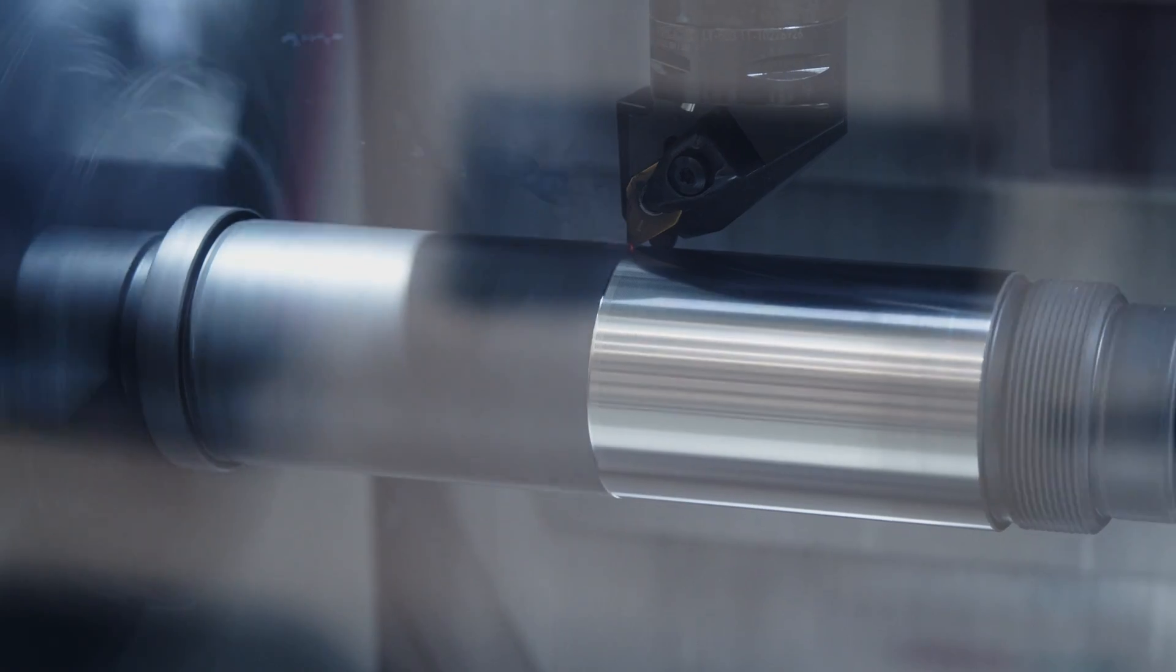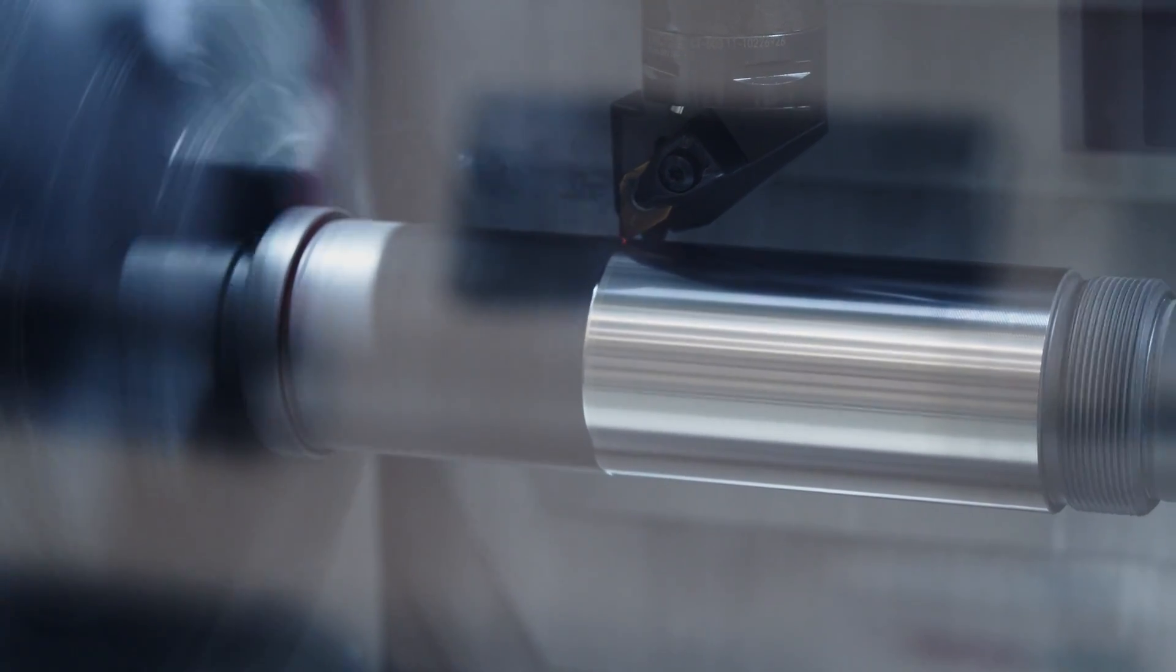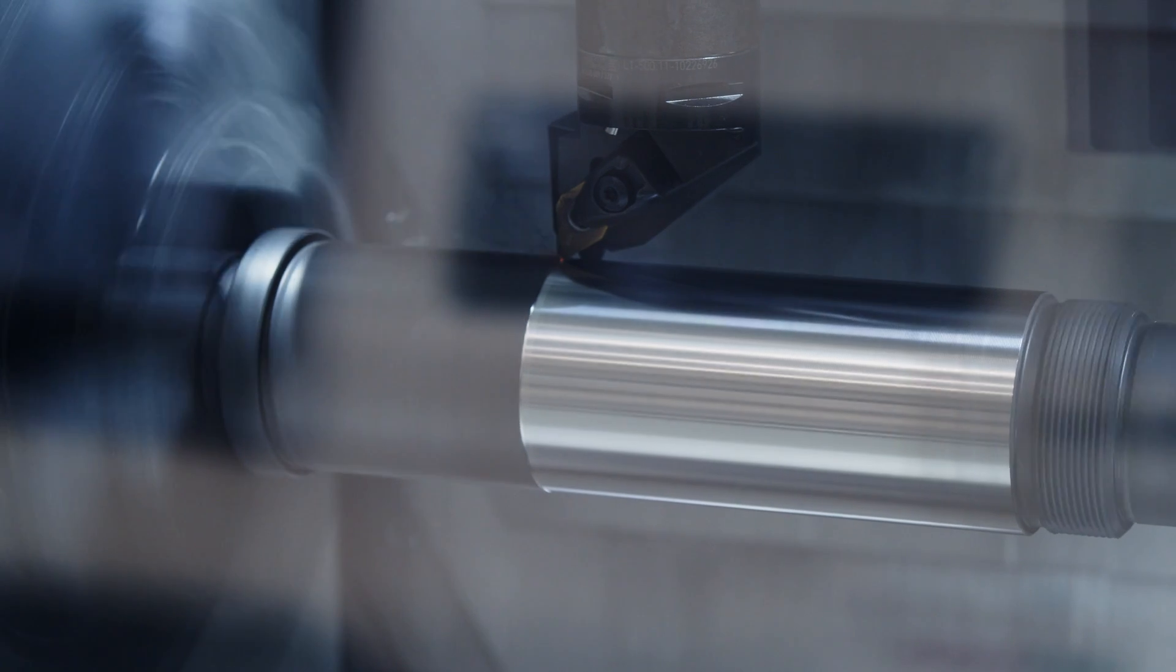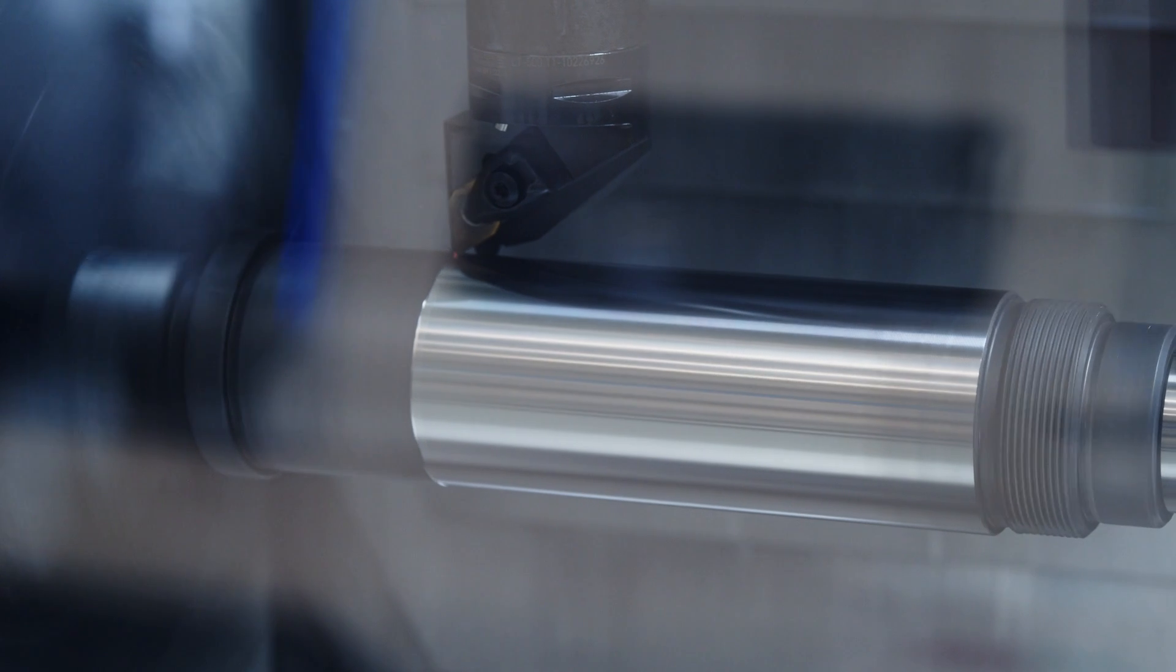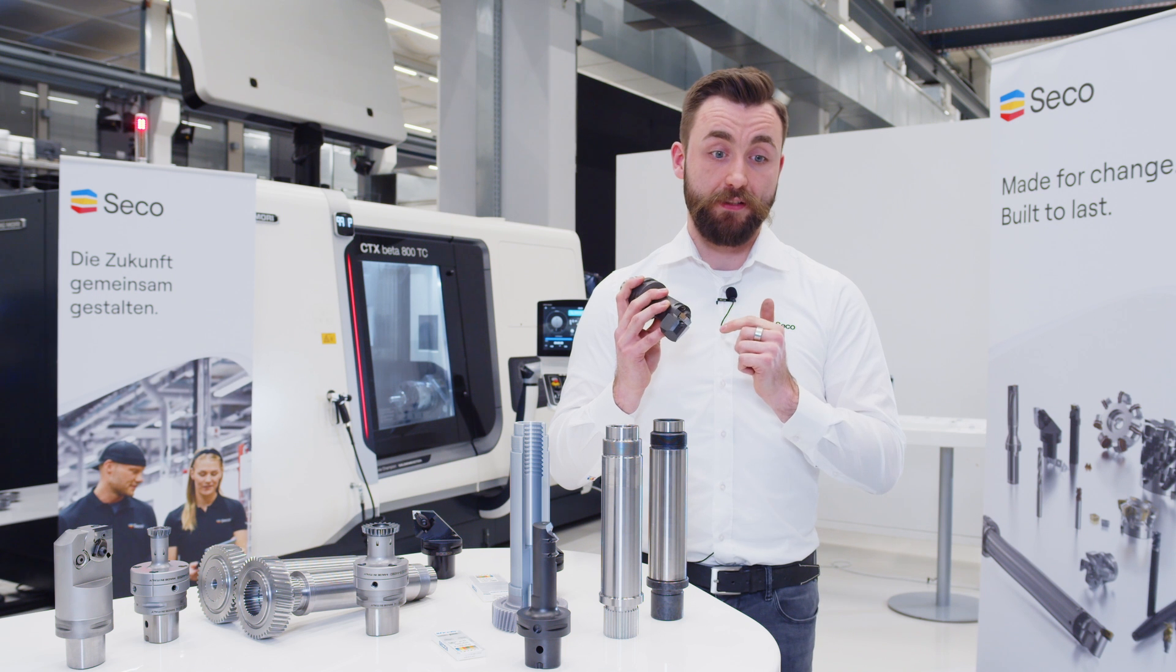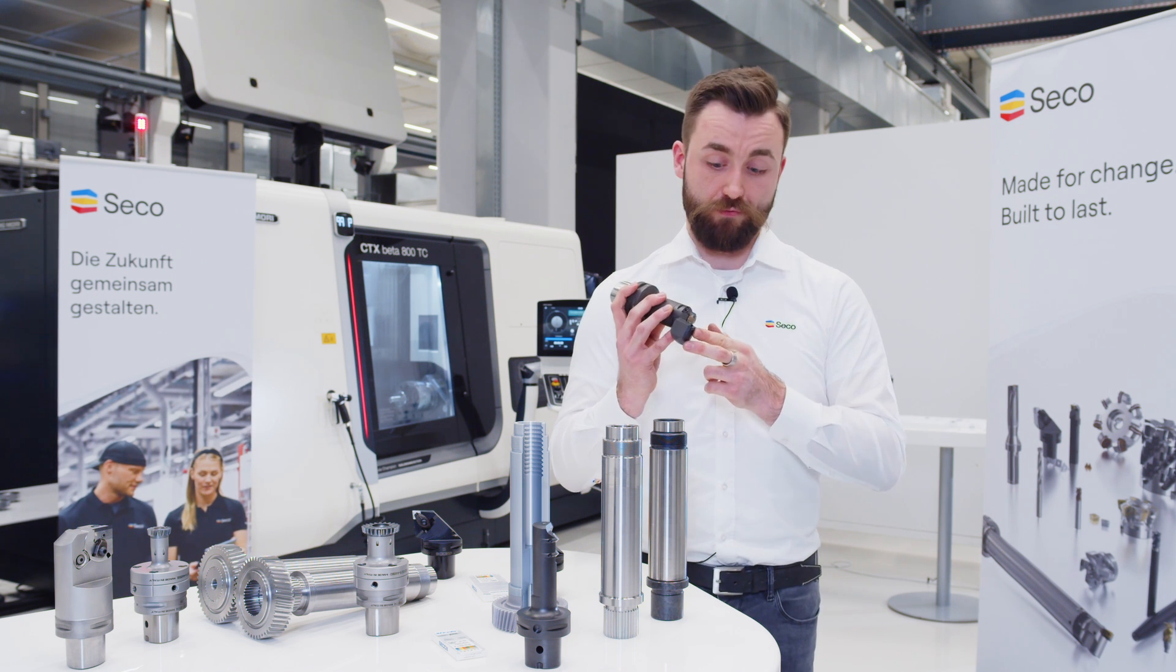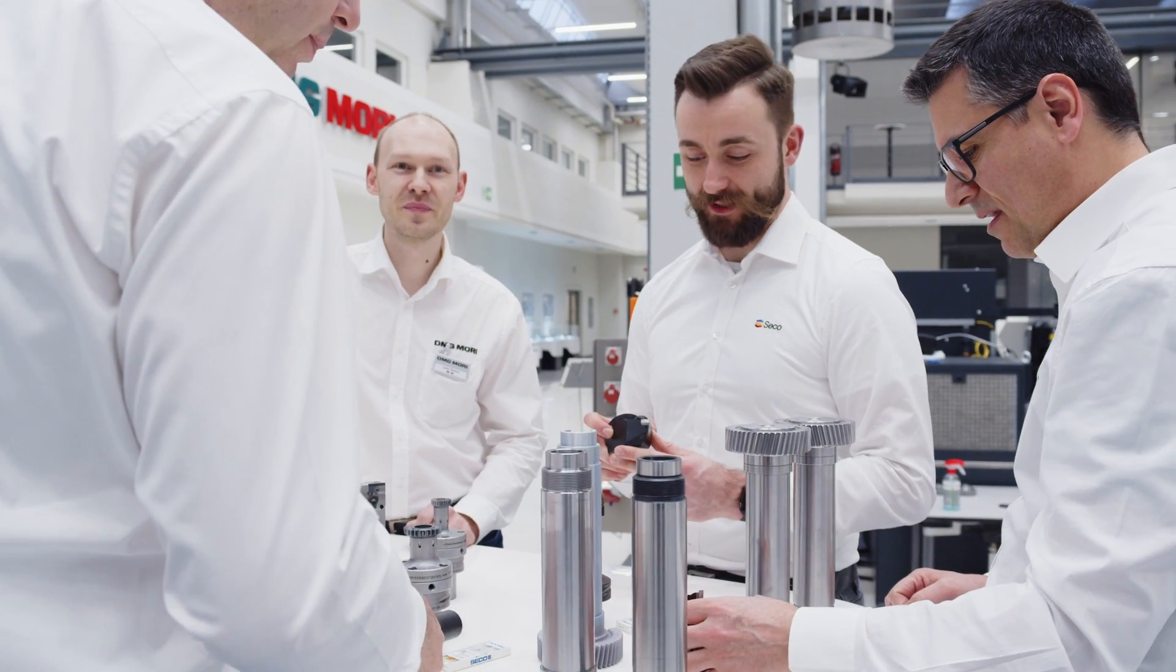For mainly instable clamping situations, parts with thin wall thicknesses or, in general, parts with small diameters. If the resulting dampening effect is high enough, you could also consider using a viper geometry like we did here to also realize higher feed rates while keeping the surface quality and machining the parts even faster.